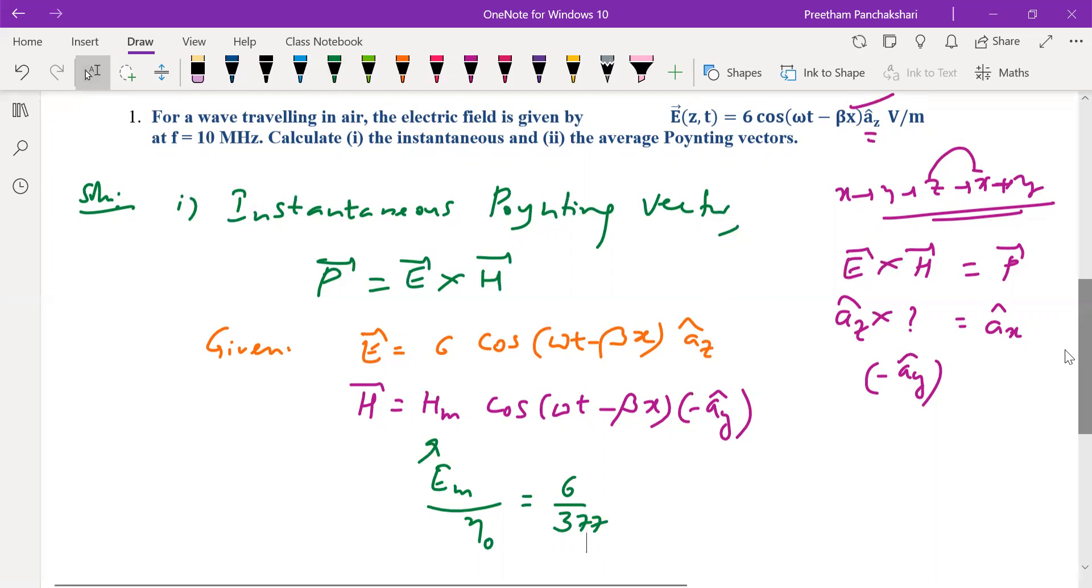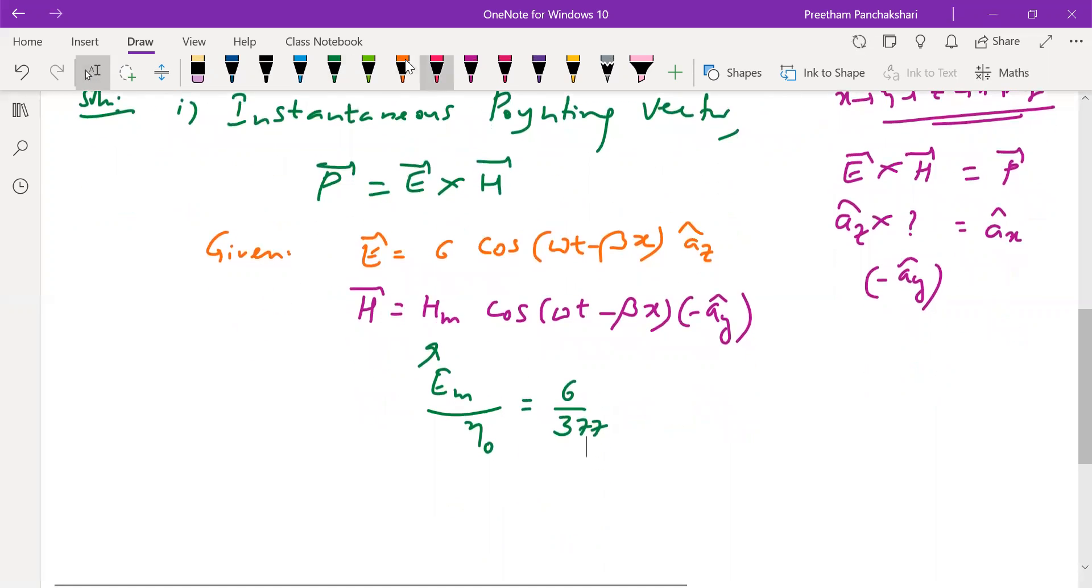We can write the complete equation of H. H is equal to, take the minus sign to the beginning, 6/377 cos(ωt - βx).